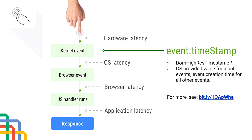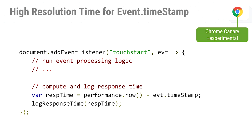For other events that are not input events, the timestamp would equal the time when the event is created by the browser. This is going through the implementation phase and I'm hoping to see it in Chrome soon. With this, if you're tracking response time of touch events, you subscribe via a TouchStart listener, then compute the final time by subtracting performance.now — which also returns the high-res timestamp — and get a much more accurate duration. This is ideally where we want to be.